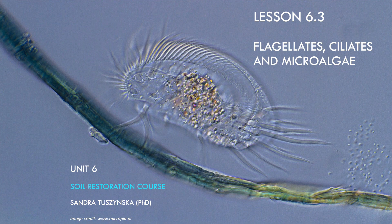Welcome to lesson 6.3. In today's lesson we'll discuss flagellates, ciliates and microalgae, as photosynthetic protists. We'll look at their shapes, the way they live or their lifestyles, and the distinguishing features that these organisms possess that makes them belong to that particular group of organisms.